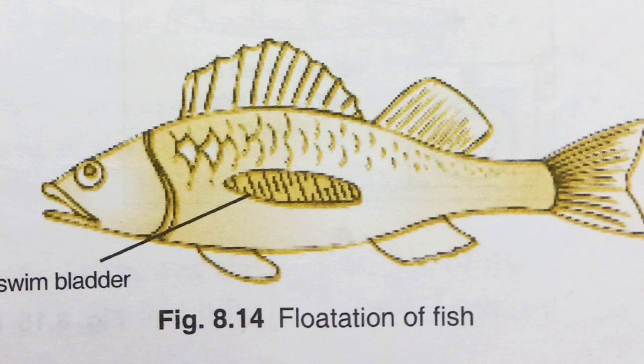Second: flotation of fish. Fish have an organ called the swim bladder. When a fish has to rise up in water, it diffuses gas from its fluid into the bladder, so its volume increases and its average density decreases — the volume of water displaced increases and the upthrust increases, so the fish rises. When the fish has to come down, it empties its bladder so that volume decreases and density increases, hence upthrust decreases and it sinks.